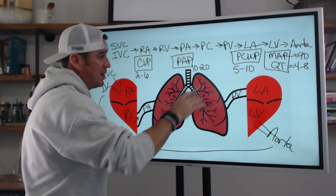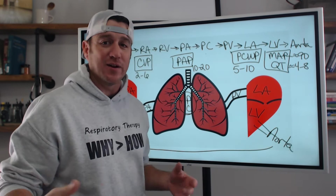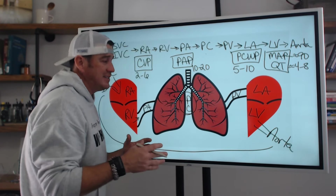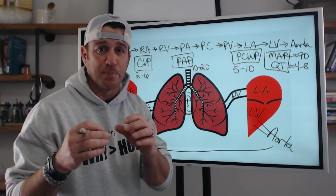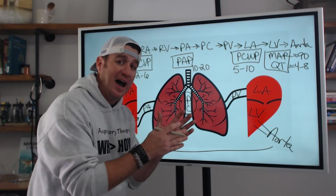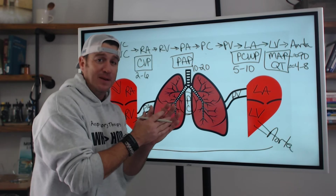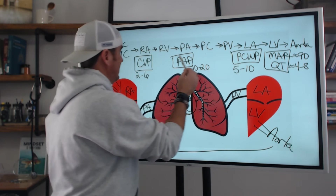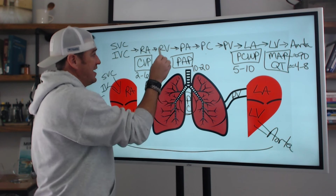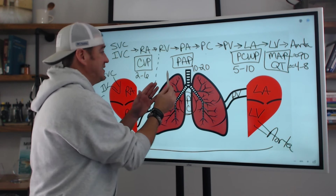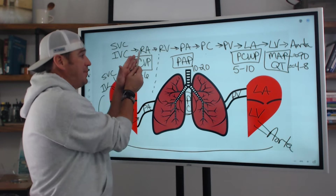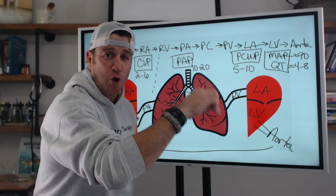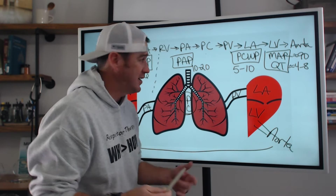Once we know what normal is, we go in and say: where's the break? Because wherever the break is, you're going to see that the values behind or before the break are elevated. So if I just draw a break here, then what we'd see is that CVP would go up, but the rest of these pressures would either stay normal or go down.